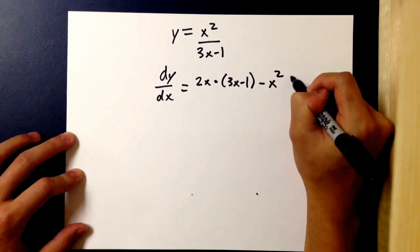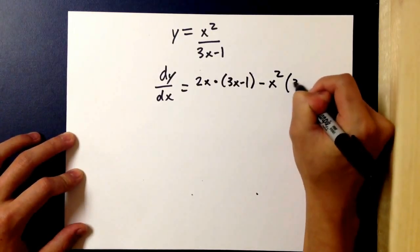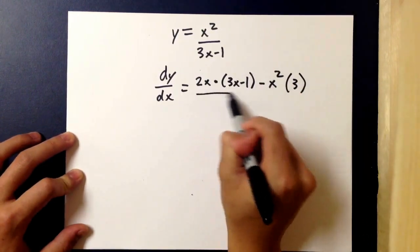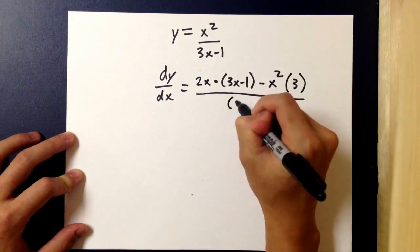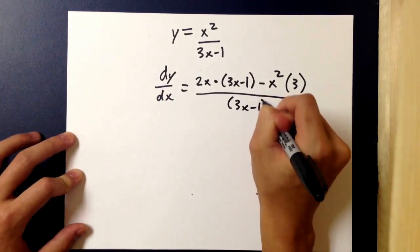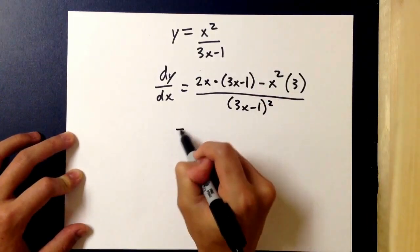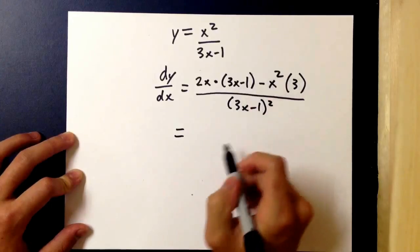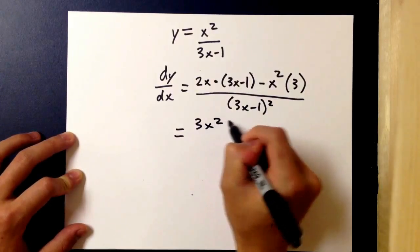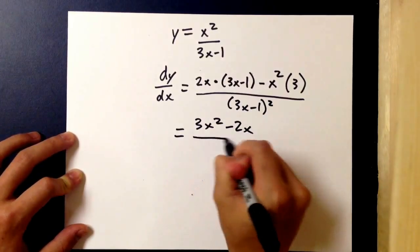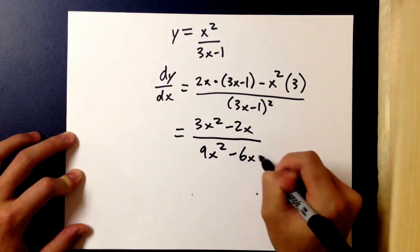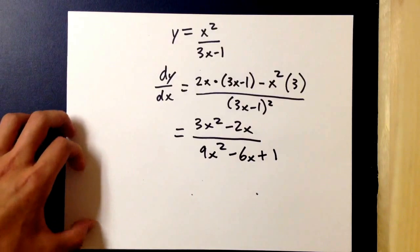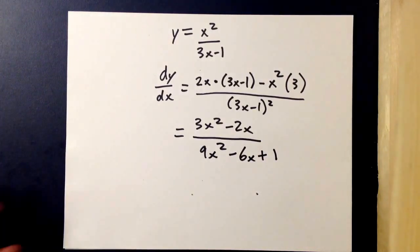times the derivative of h of x, the bottom, which using power rule again we find that it's just 3, and then all over the denominator squared, so 3x minus 1 squared. Simplifying this we'd get 3x squared minus 2x over 9x squared minus 6x plus 1, and just like that we found the derivative of x squared over 3x minus 1 using the quotient rule.